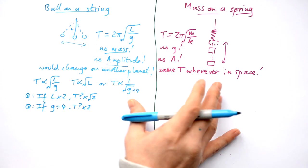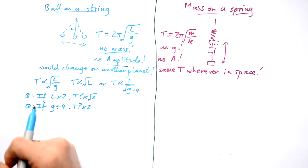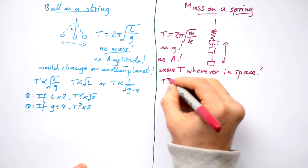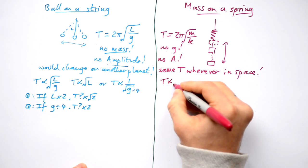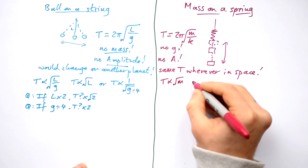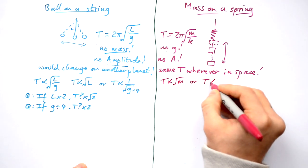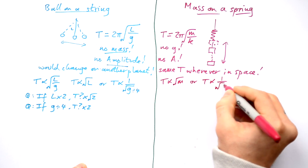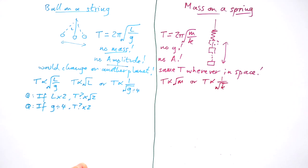These kind of questions for pendulums and mass and springs crop up all the time in multiple choice in your exams. So it's worth getting ahead around the whole proportionality thing for these two equations. Same over here. Time period is proportional to root M or T is proportional to 1 over the root of the spring constant.